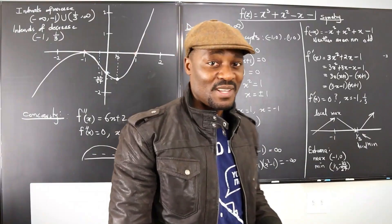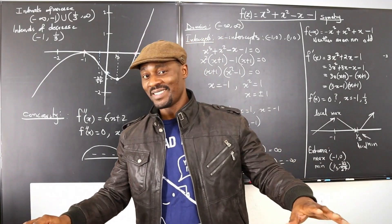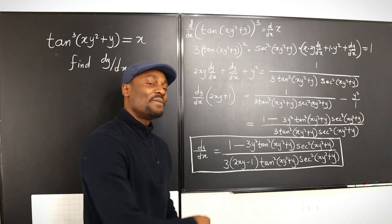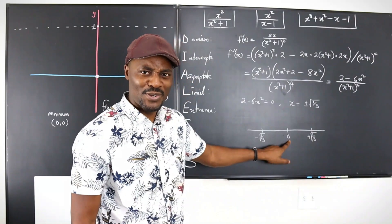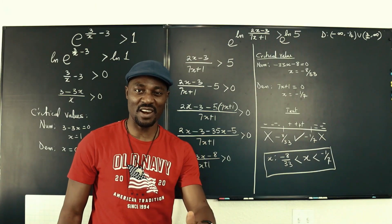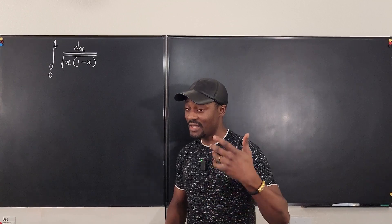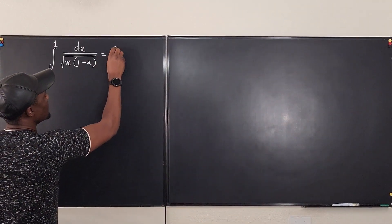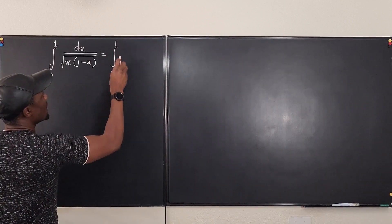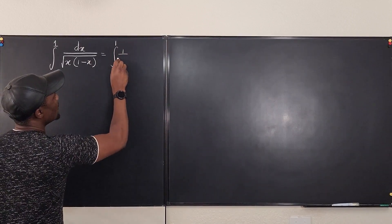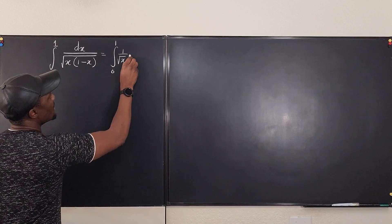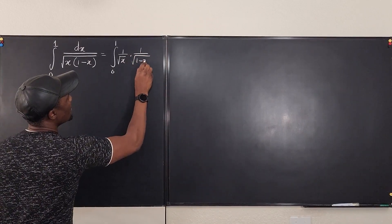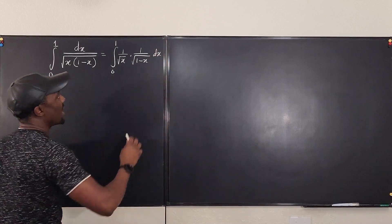So my choice is to split. I'm going to say this is equal to the integral from 0 to 1 of 1 over the square root of x times 1 over the square root of 1 minus x, dx.